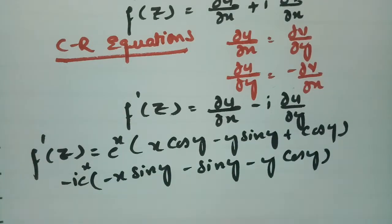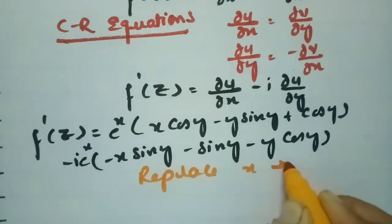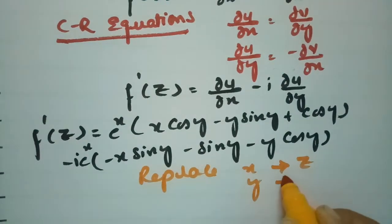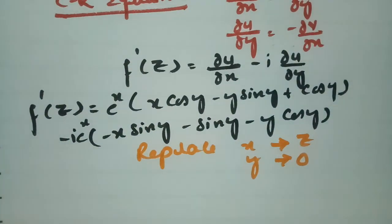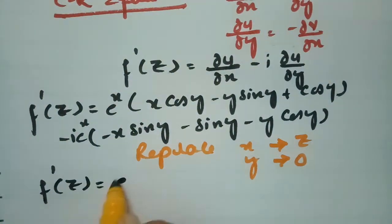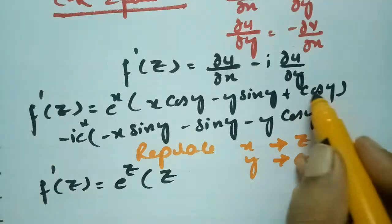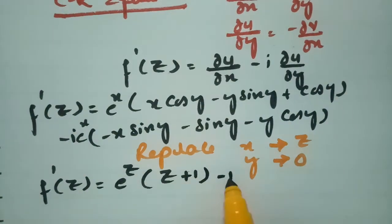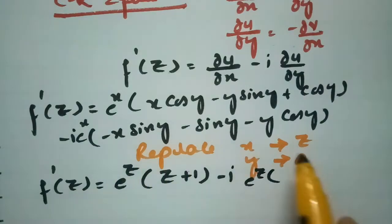After substituting ∂u/∂x and ∂u/∂y, according to the Milne-Thompson method we have to replace x by z and y by 0. So f'(z) becomes e^z times (z·cos 0 − 0·sin 0 + cos 0) minus i times e^z·(sin 0 − 0 − 0). Since cos 0 = 1 and sin 0 = 0, the imaginary bracket vanishes.